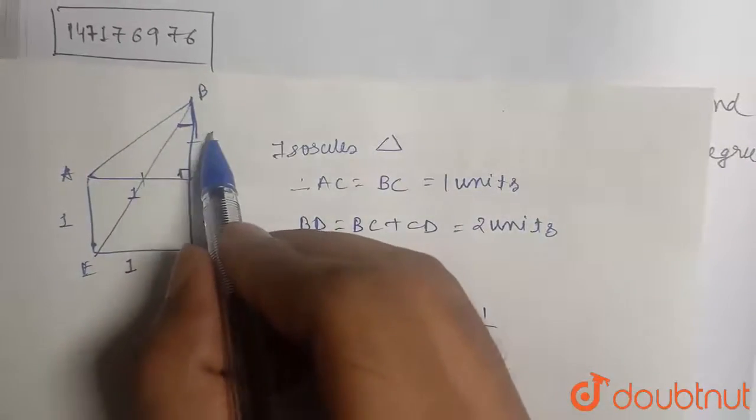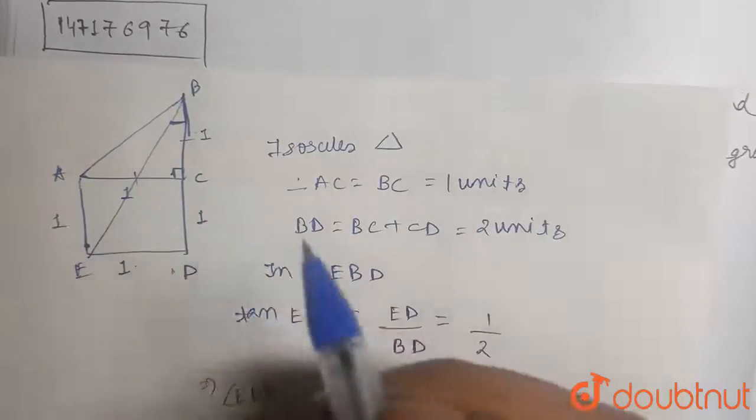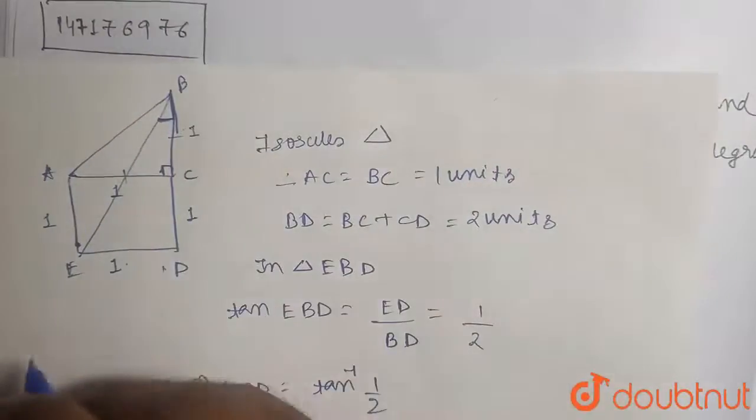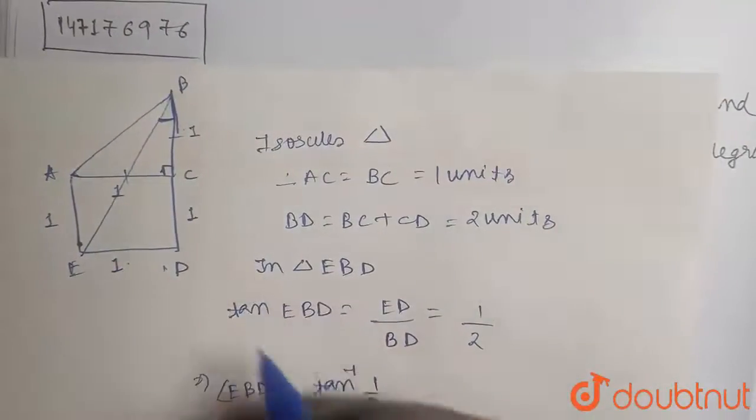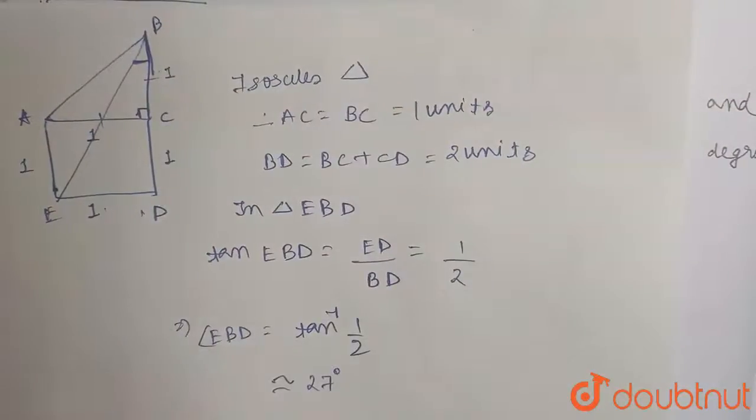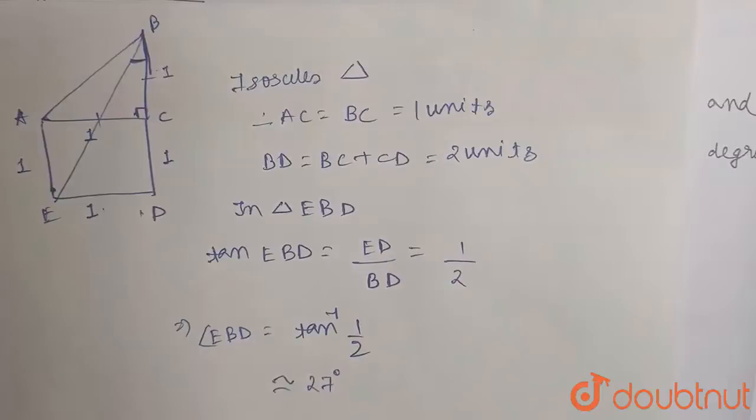And using this triangle and some basic trigonometric ratios, you can get the value of this angle. Yes, tan of EBD will be ED divided by BD. I hope you guys understood. Thank you very much.